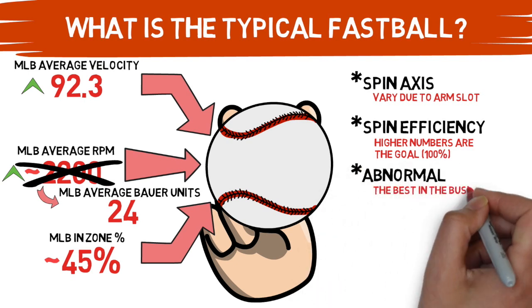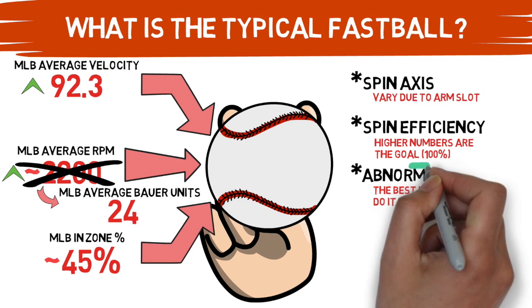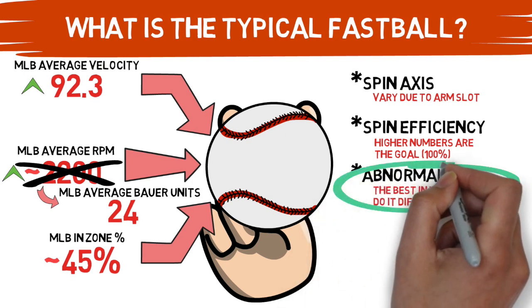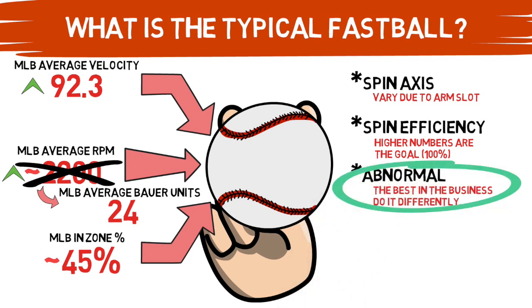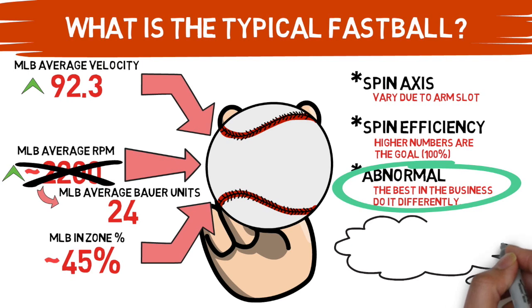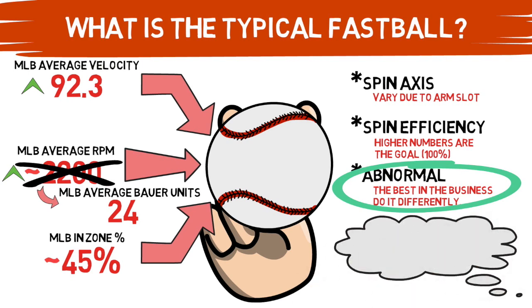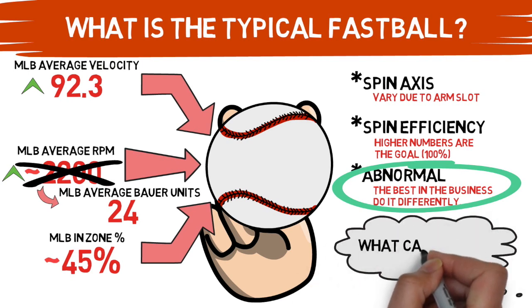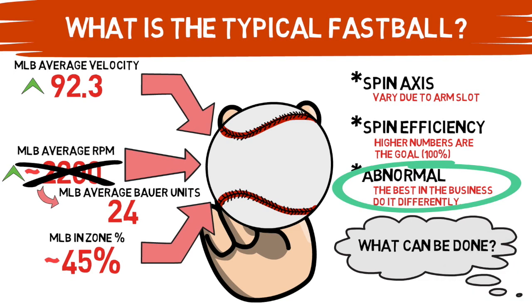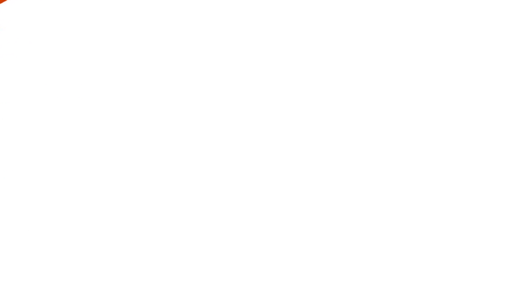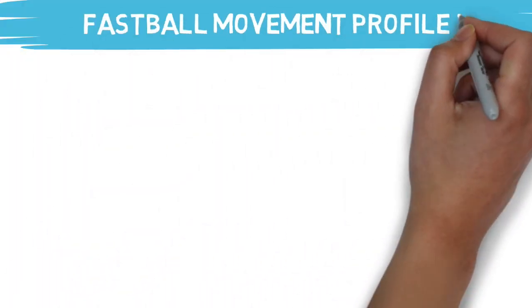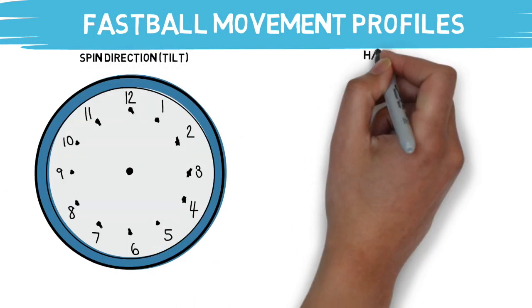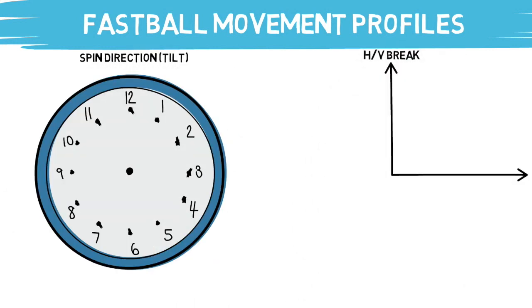Most of these things can actually be altered through the pitch design process, and the one thing that I personally focus on is creating abnormalities. When we begin to talk about pitch design, the two largest contributing factors to the movement of the pitch are going to be spin direction — or tilt — of the pitch, and the horizontal and vertical break of that pitch, all of which are things that can be manipulated in some way.